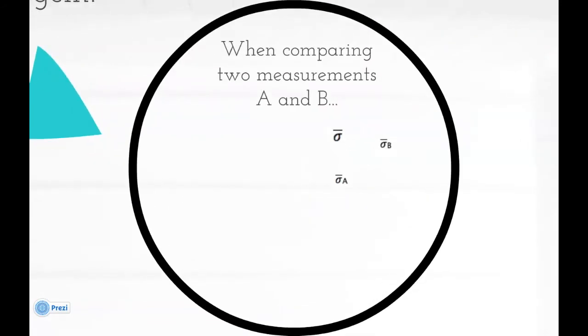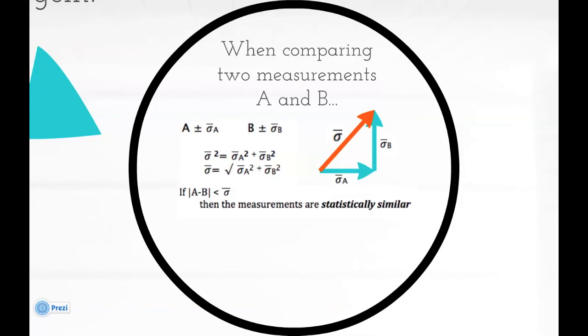When comparing two measurements A and B, you find the hypotenuse value of the two standard deviations of the means. If the absolute value of A minus B is less than that hypotenuse value, then the measurements are statistically similar.